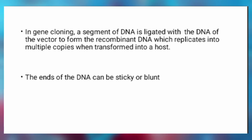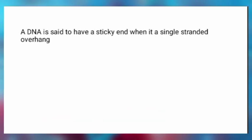When we say a DNA has a sticky end, what we mean is that one of the double strands is longer than the other. In other words, there is an overhang in such a double-stranded DNA. In such cases, incorporation of that DNA into a plasmid or the vector becomes much easier because of the presence of these sticky ends.